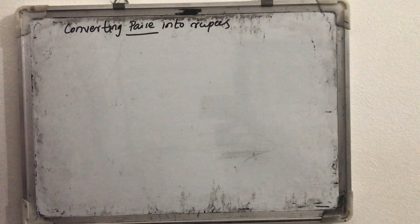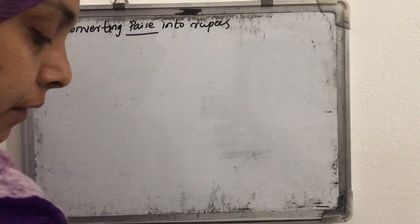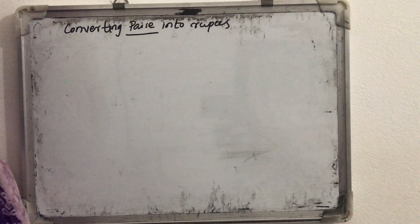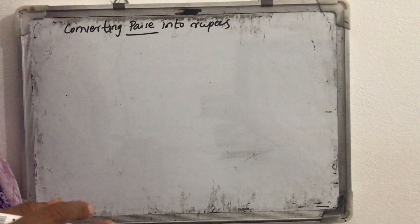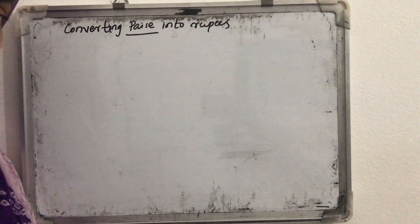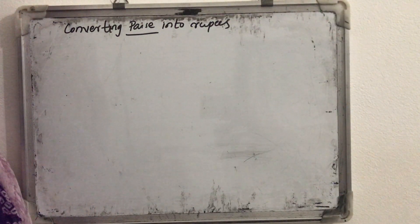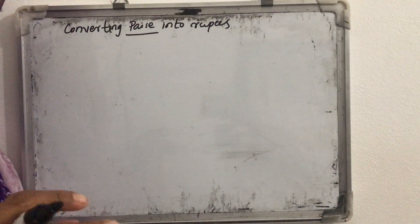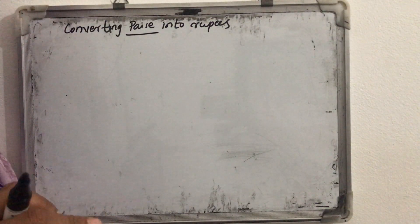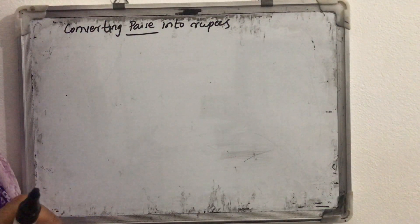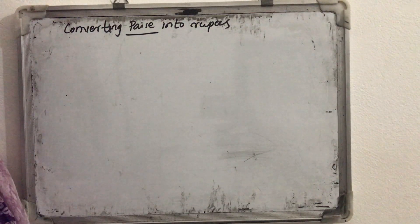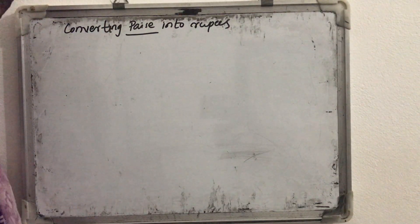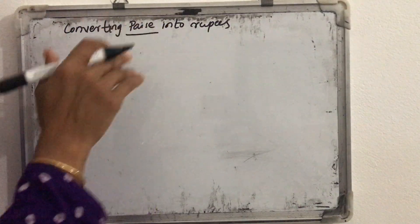Good morning all of you. Today we can discuss how we can convert paise into rupees. Last class we discussed how we convert rupees into paise — when we convert rupees into paise we are multiplying that number by 100. So the reverse is also what we want to do: how we convert paise into rupees.